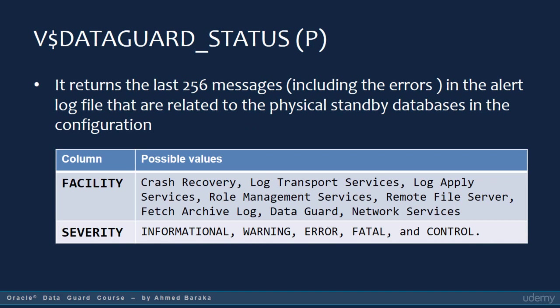Here I am talking about the V$DataGuard Status view. This view displays the most recently written messages from the alert log file or server process trace files that concern physical standby databases. It has two key columns: facility and severity. The facility column represents the category of the event, such as crash recovery or log transport service. Severity describes the severity of the event. This view is very helpful when troubleshooting Data Guard — you can use it to see the events that happened right before an issue was raised.